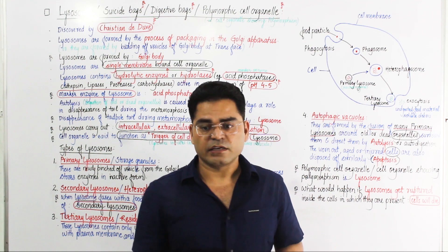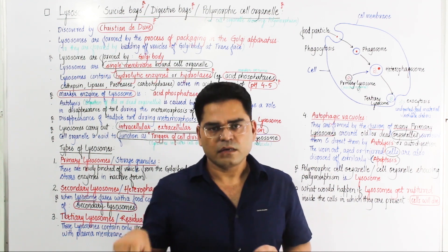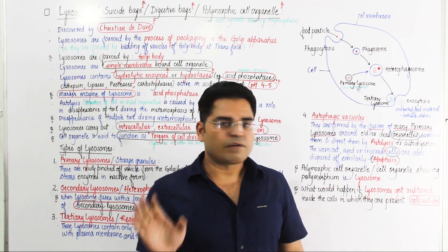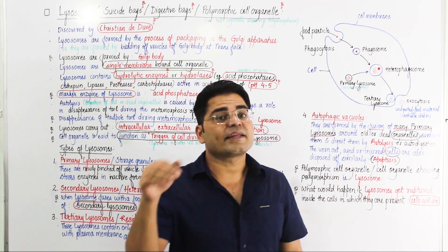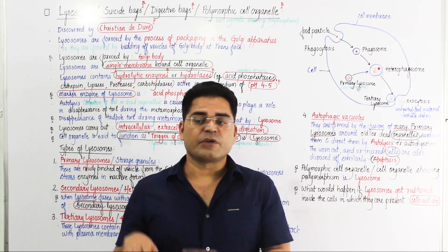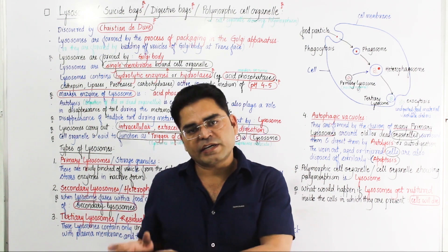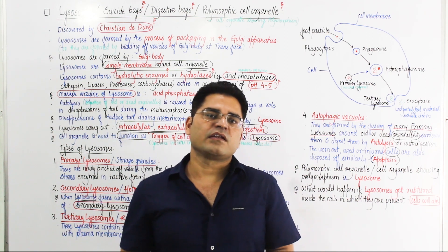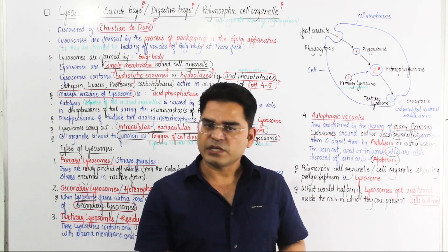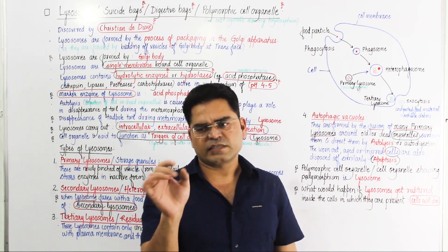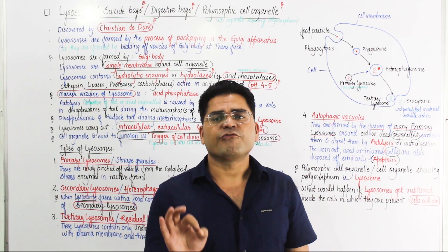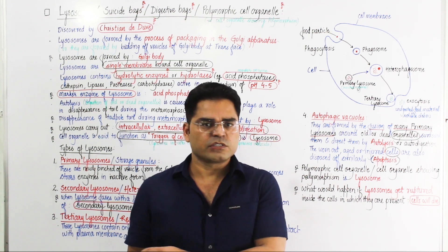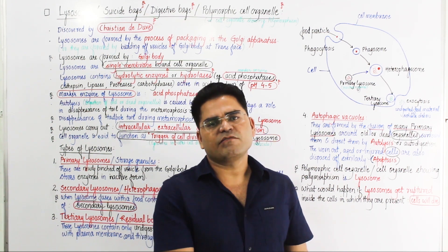The disappearance of the tadpole's tail is due to lysosomal activity — specifically autolysis via cathepsin. So if you are asked which cell organelle is responsible for the disappearance of the tail during frog metamorphosis, the answer is the lysosome. This is also related to the process that triggers autolysis.